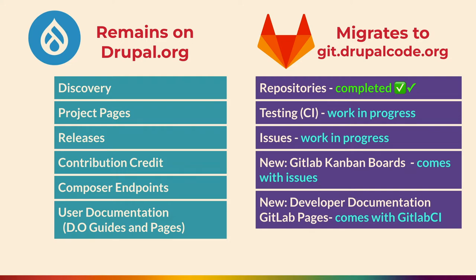First I want to talk about what stays on Drupal.org and what will be on GitLab after the initiative is complete. Drupal projects, releases, endpoints with APIs, contribution credit, and user documentation stays on Drupal.org — these are very Drupal-specific components. Code is already on GitLab, and now we're working on replacing the current bespoke Drupal CI with more standard GitLab CI, after which contributors can begin using GitLab issues.